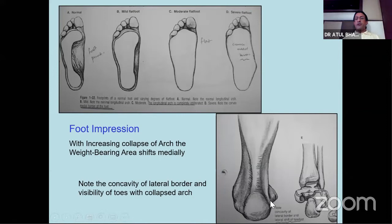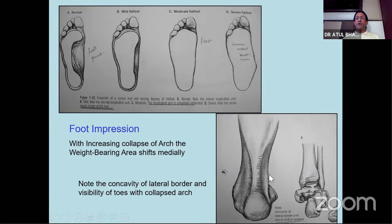If you look at severe flat foot, you will find that the lateral border becomes concave, which tells you that the foot is very severely collapsed. This is very commonly seen in tibialis posterior dysfunction, in planovalgus foot because of cerebral palsy, or in myelomeningocele. It is important to remember the severity of the deformity when you see this kind of pattern.